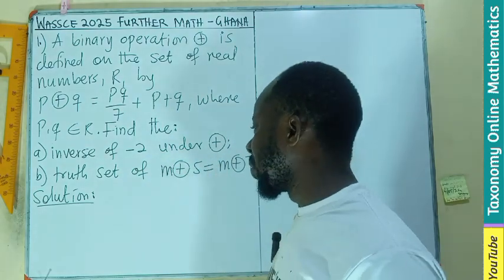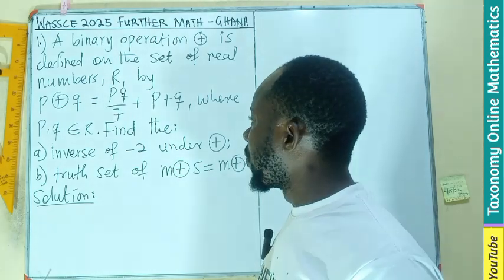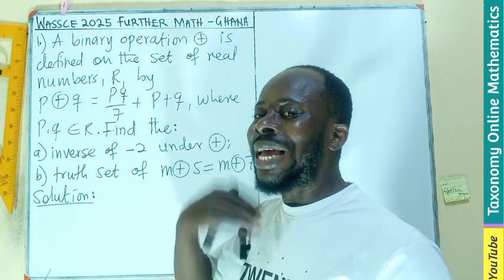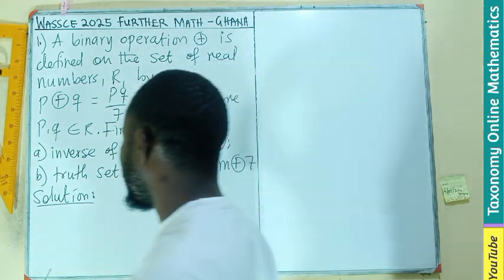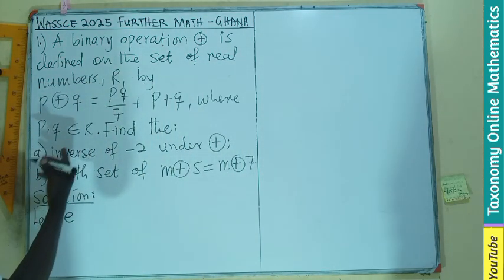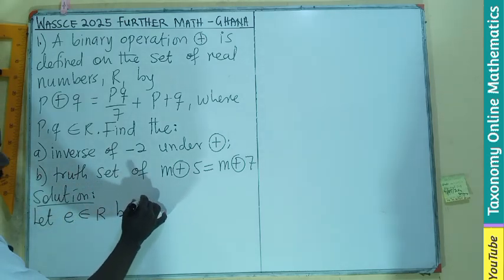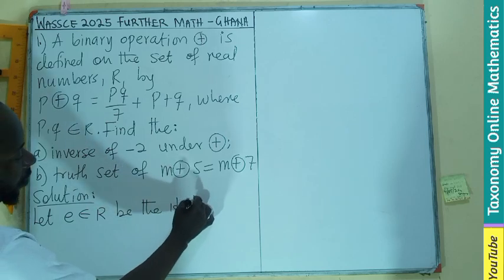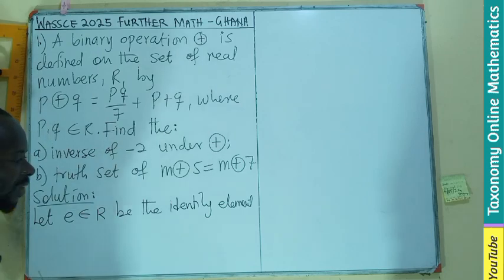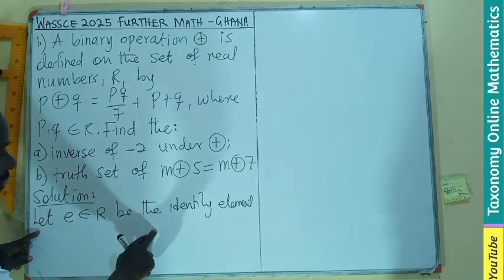First things first — to find the inverse of the operation, we need to first find the identity element. So let e, which is also a member of the real set, be the identity element.